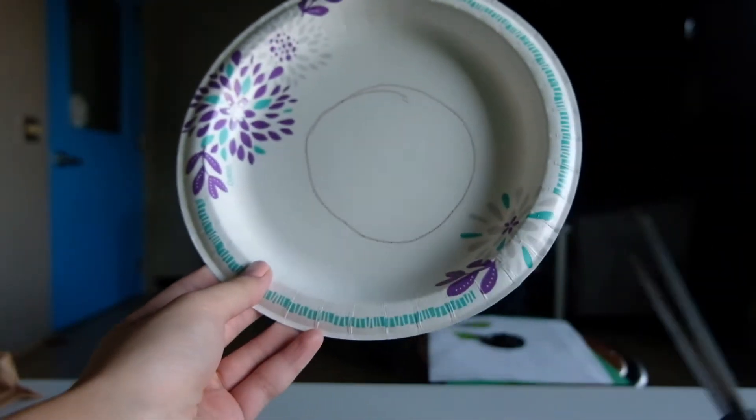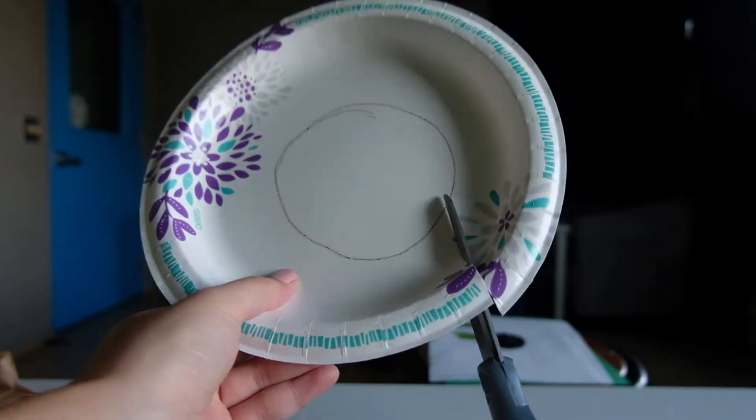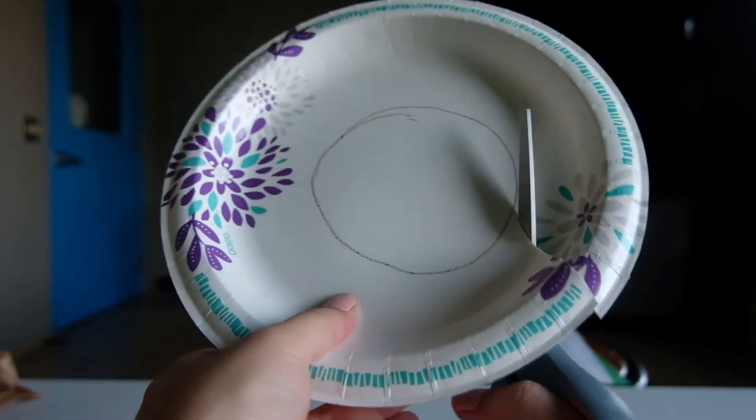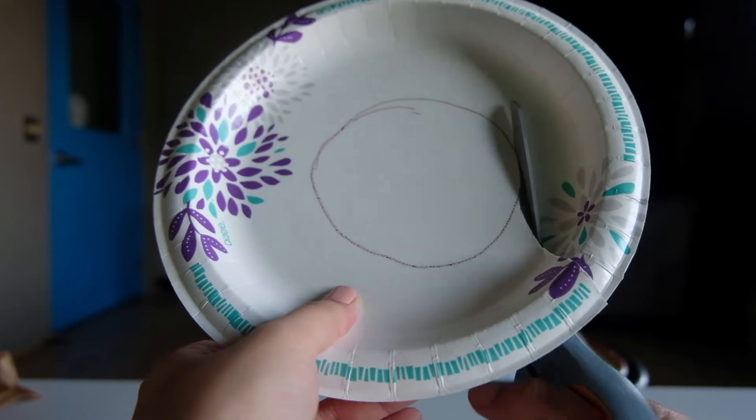Once you are done drawing the circle, grab your pair of scissors and start cutting around until you cut out the shape of the circle.